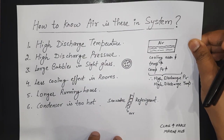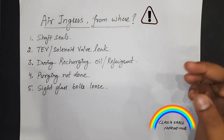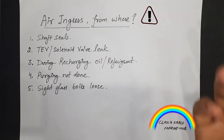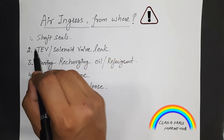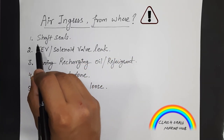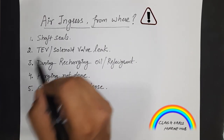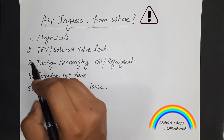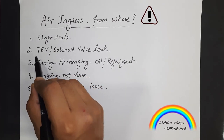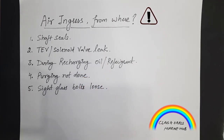Now we will discuss from where the air ingress happens — from where does air enter into the reefer compressor system or the air conditioning system. The first point may be that the shaft seals are not intact; therefore, air may ingress from the shaft seals. Second point, the thermostatic expansion valve or the solenoid valve may be leaking, so from there the air may find its way.